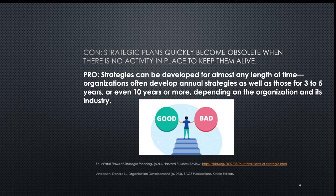One of the cons of strategic planning is that it quickly becomes obsolete when there is no action in place to keep it alive. For change to happen, there must be action that actually supports it. One of the pros is that these strategies can be developed for almost any length of time — organizations often develop annual strategies as well as those for three to five years, or even ten years or more, depending on the organization and its industry.